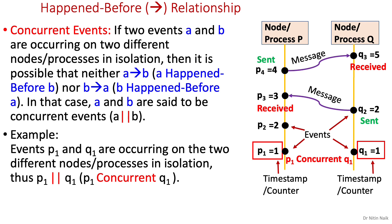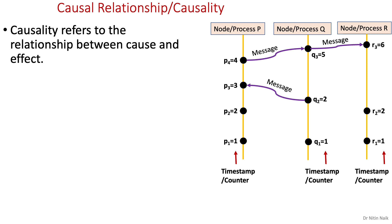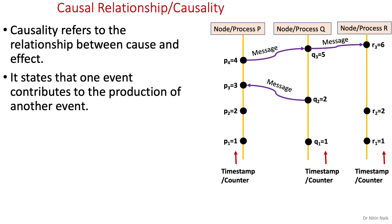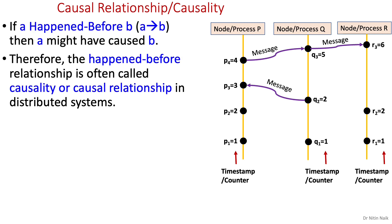Let's talk about causality in physics first. Causality is the principle that nothing can happen without being caused. Causality refers to the relationship between cause and effect, meaning that one event contributes to the production of another event, and it is normally tracked using physical time. The first event is called the cause and the second event is called the effect. Now let's look at causality in distributed systems, where a global physical clock and physical time cannot be used to establish causality. So we use logical time and happened-before relationship to establish causality.